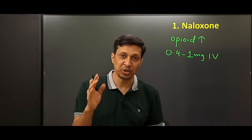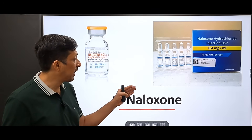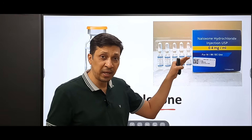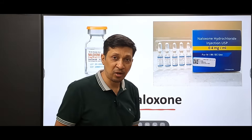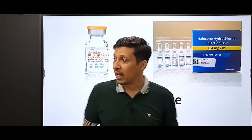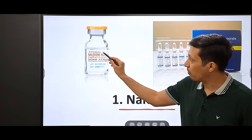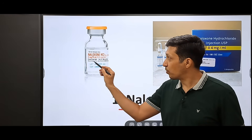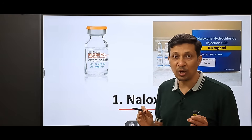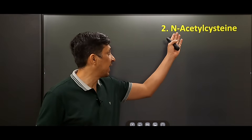Naloxone is available as a 1 ml ampoule containing 0.4 mg of drug, and also as a 10 ml vial containing 4 mg. That is all about naloxone. The second antidote in our list is N-acetylcysteine, used when there is paracetamol toxicity.